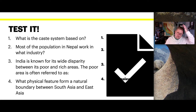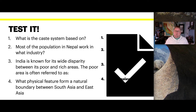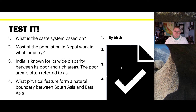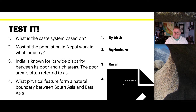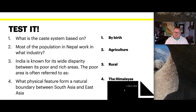Let's go through four review questions that will appear on an exam. Question one: What is the caste system based on? Question two: Most of the population in Nepal work in what industry? Question three: India is known for its wide disparity between poor and rich areas — the poor area is often referred to as what? Question four: What physical feature forms a natural boundary between South Asia and East Asia? Answers: The caste system is based on birth. Most of Nepal's population works in agriculture. The poor area is referred to as the rural area. The physical feature is the Himalayas.